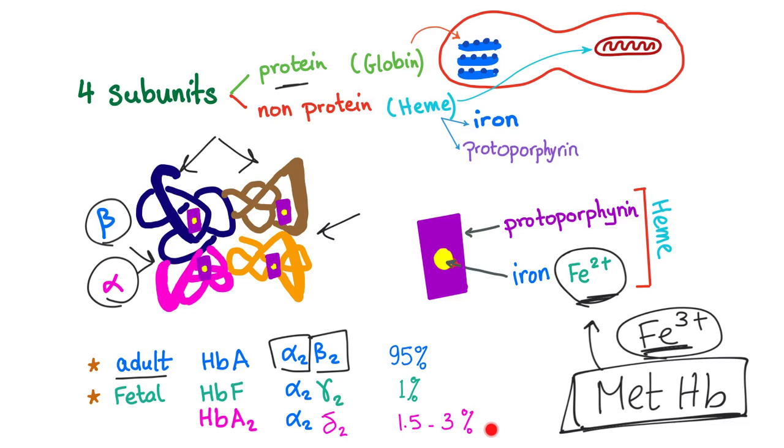In adults, hemoglobin has different types. 95% is called adult hemoglobin or hemoglobin A, A for adult. Consists of α2β2, means two alpha subunits and two beta subunits. The normal fetal hemoglobin is called hemoglobin F, two alpha subunits and two gamma subunits. But in adults, it only constitutes 1% of the total hemoglobin.